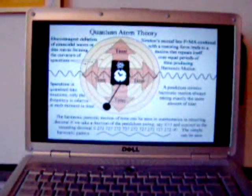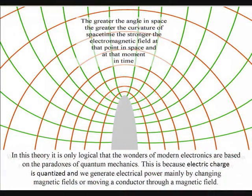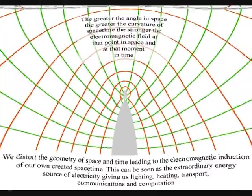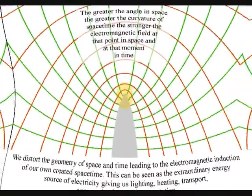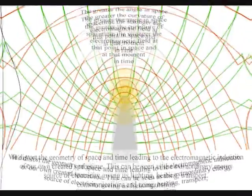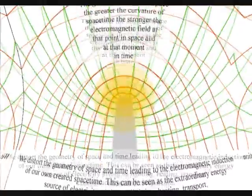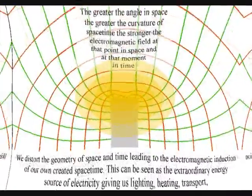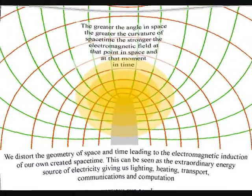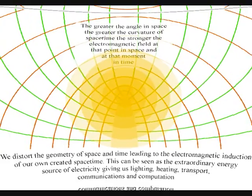In this theory, it is only logical that the wonders of modern electronics are based on the paradoxes of quantum mechanics. This is because electric charge is quantized, and we generate electrical power mainly by changing magnetic fields or moving a conductor through a magnetic field. This will distort the geometry of space and time, leading to the electromagnetic induction of our own created space-time, in other words, electricity.